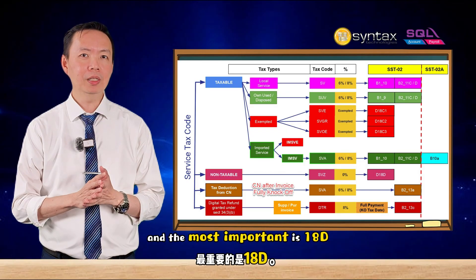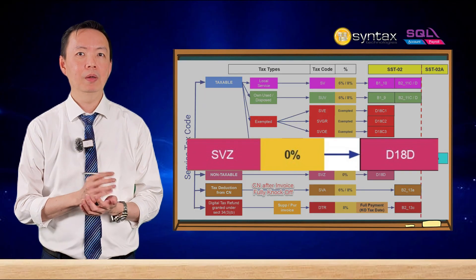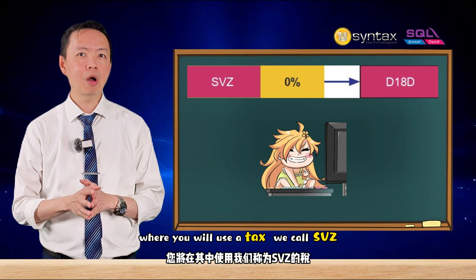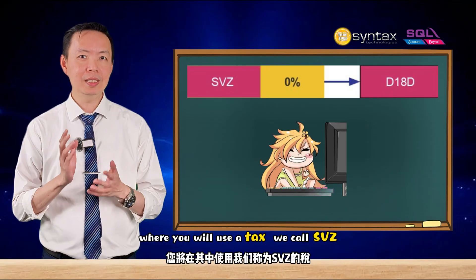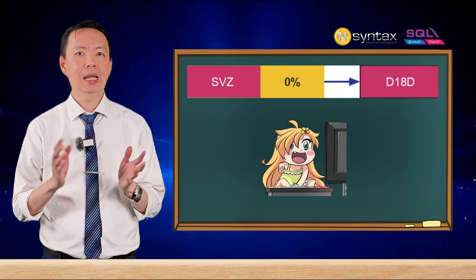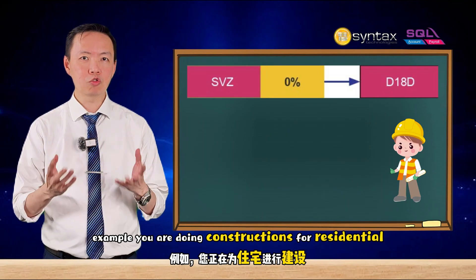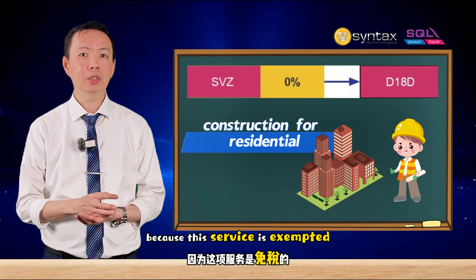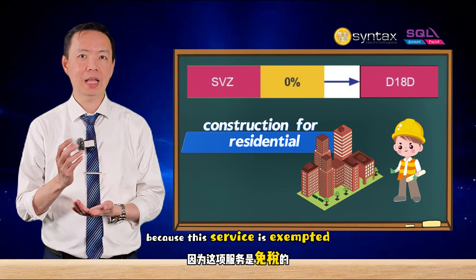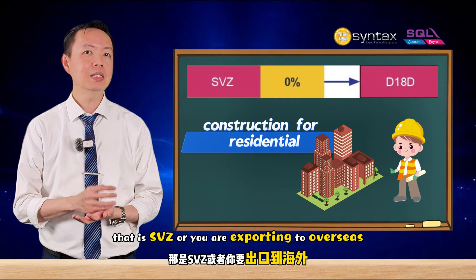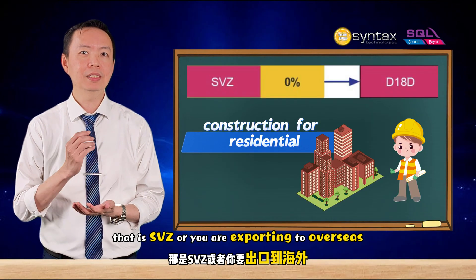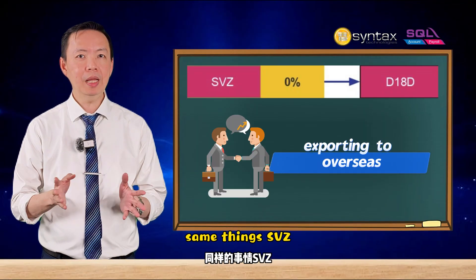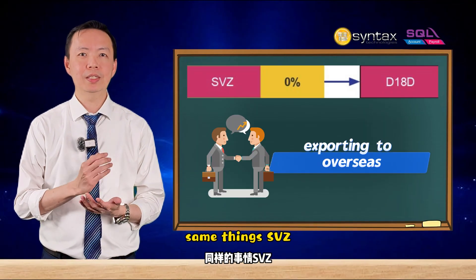And the most important is 18d, where you will use a tax code called SVZ. For example, if you are doing construction for residential, because this service is exempted, then it is SVZ. Or if you are exporting overseas, same thing — SVZ.